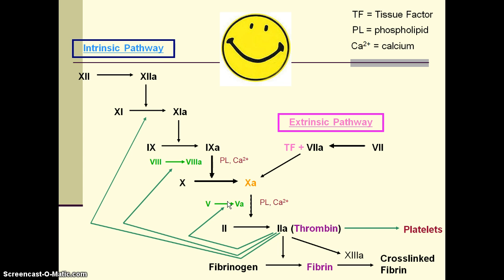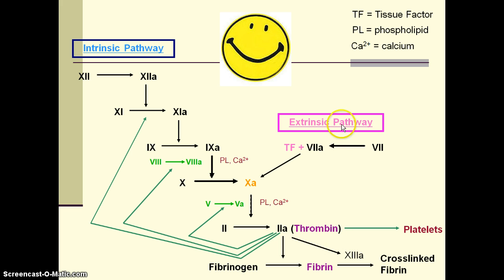Before discussing warfarin reversal, we need to review the coagulation cascade. Once there is vascular injury, tissue factor is exposed in the subendothelial layer. Factor 7 flowing in the blood vessel encounters tissue factor and is activated into factor 7a. The tissue factor–factor 7a complex activates factor 10, which then activates the rest of the common pathway to make thrombin and eventually fibrin clot. Once a burst of thrombin and fibrin is made via the extrinsic pathway, that pathway is shut off by the tissue factor pathway inhibitor (TFPI). This is why, in vivo, thrombin must feed back to activate factors 11, 8, and 5 as part of the intrinsic pathway to continue thrombin and fibrin clot production.